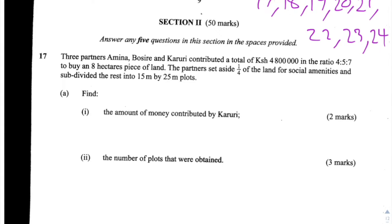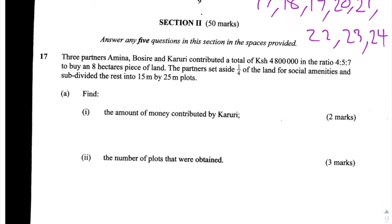We're now on to section 2 of the 2015 KCSE Maths paper. This section consists of 8 questions: 17, 18, 19, 20, 21, 22, 23 and 24. We're told to answer any 5 questions and each of the questions is worth 10 marks. So the total for this section is 50 marks. Let's start with question 17.